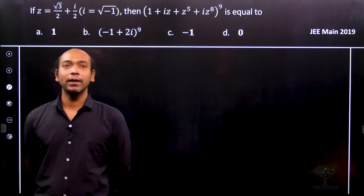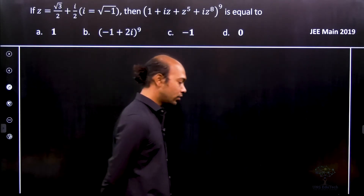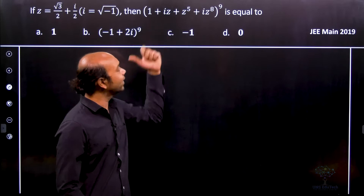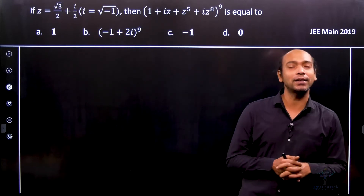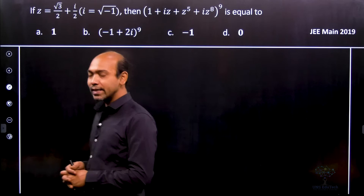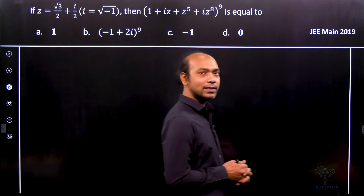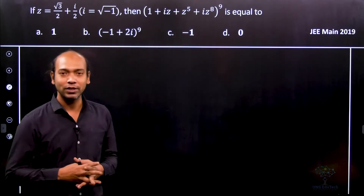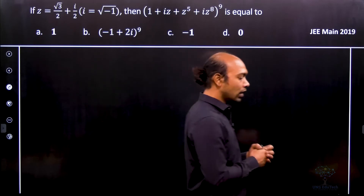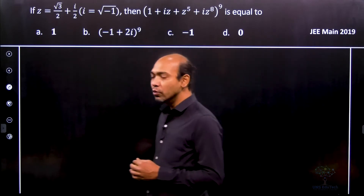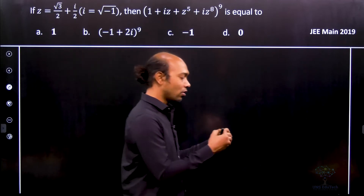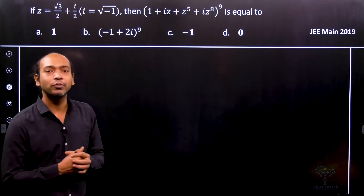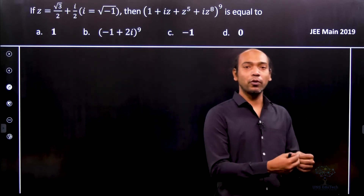Hi all, see this — this is a problem from JEE Main 2019 where we have to find out the required expression, where z is given in x plus iy form. We'll face difficulties if we try to expand z to the power 5 and z to the power 8 using the binomial theorem. So here we'll use De Moivre's theorem or Euler's formula. First, we have to rewrite this complex number z in polar form.